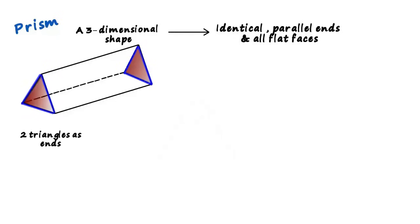This figure has two triangles at its ends and it has three rectangles as faces. This one in the front, one at the back and one at the bottom.